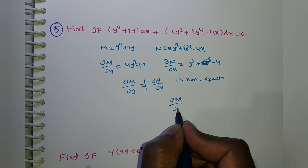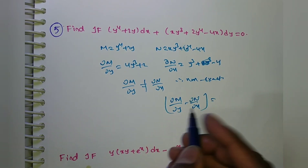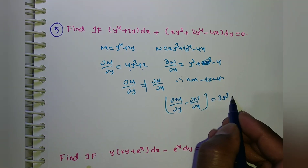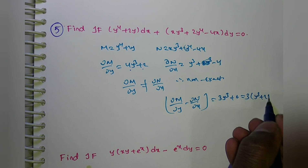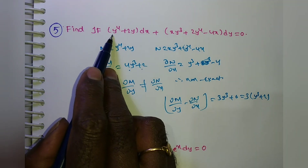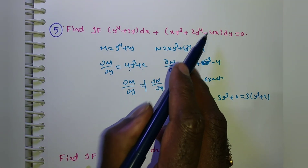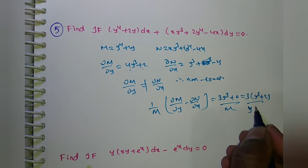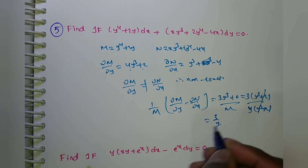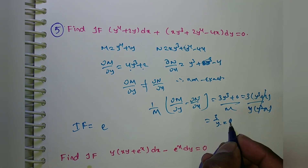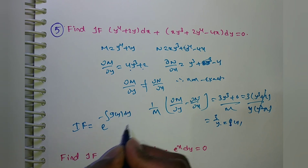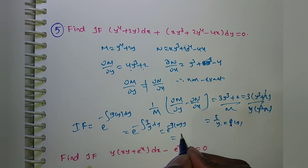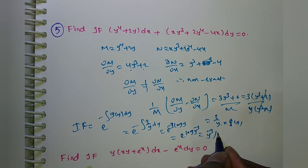Rule 4 or Rule 5: compute ∂M/∂y − ∂N/∂x = (4y³ + 2) − (y³ − 4) = 3y³ + 6 = 3(y³ + 2). Divide with M: M = y(y³ + 2), so [3(y³ + 2)] / [y(y³ + 2)] = 3/y. This is a function of y only, so use Rule 5. The integrating factor is e^(−∫g(y) dy) = e^(−∫3/y dy) = e^(−3 ln y) = e^(ln y^(−3)) = y^(−3).